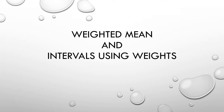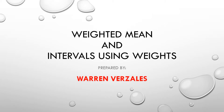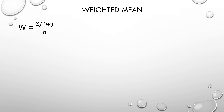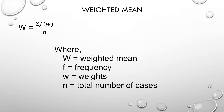We will be solving for the weighted mean and establishing intervals using weights. The formula for the weighted mean is W = Σfw / n, where the capital W is the weighted mean, the small f is the frequency, the small w is the weight, and n is the total number of cases.